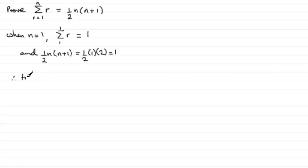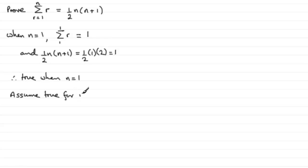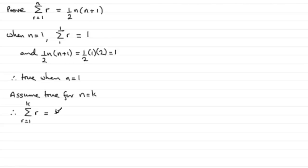Therefore true when n equals 1. That's the first thing you do when proving something by induction. The next thing we do is assume it's true for some value of n — assume true for n equals k, some positive integer value. So if it's assumed true for n equals k, that means Sigma of r going from 1 to k equals a half k times k plus 1.